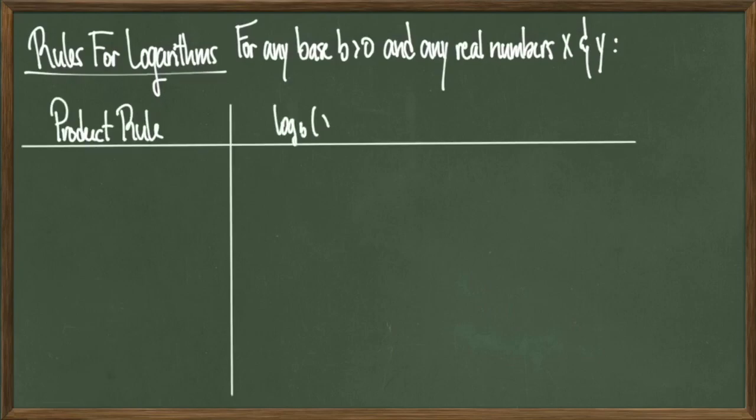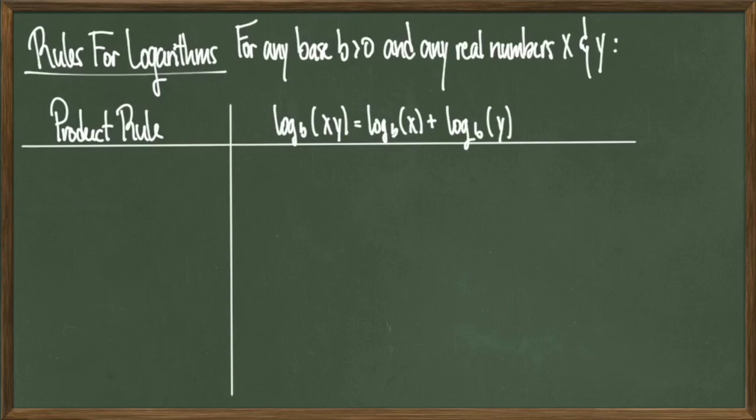The first property is called the product rule. It says that log base b of x times y is equal to log base b of x plus log base b of y. So basically, a product within a log will split into the sum of two logs of the same base, where each log has exactly one of the components in the original product.